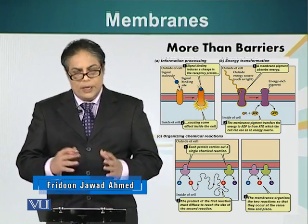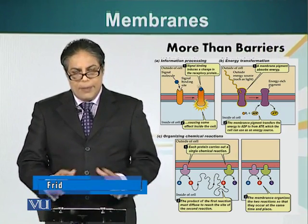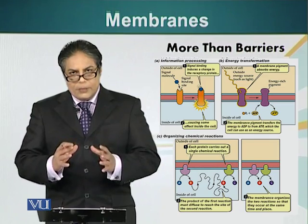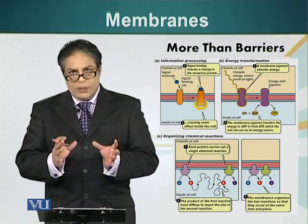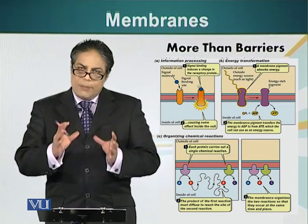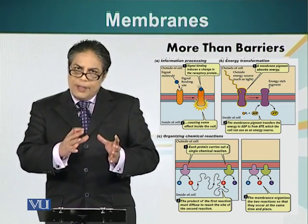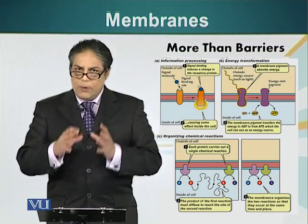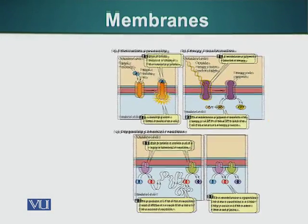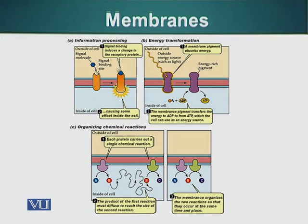Today I will hopefully convince you that membranes do a lot more than just providing a barrier. Membranes have special proteins on them. These proteins serve as receivers of different types of signals. Just like antennas placed on rooftops, these membrane proteins look for signals, and when they receive a signal they transmit that information to the rest of the cellular machinery.